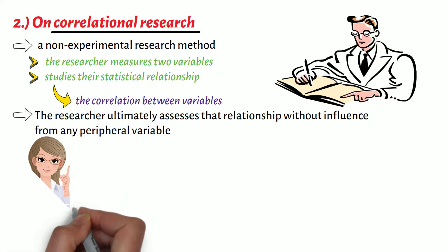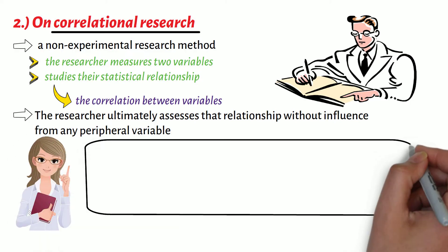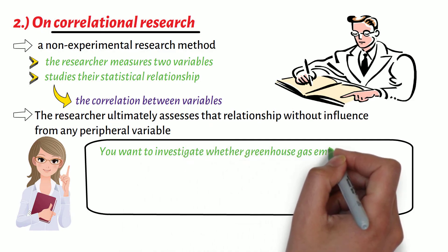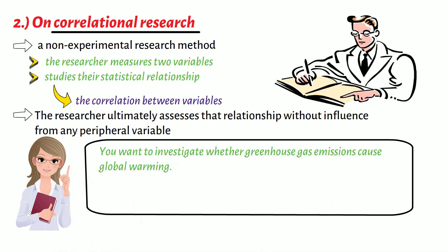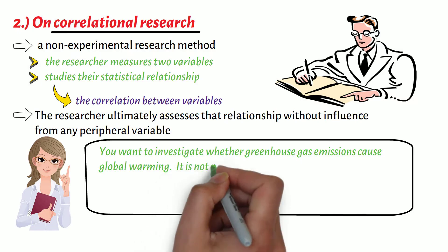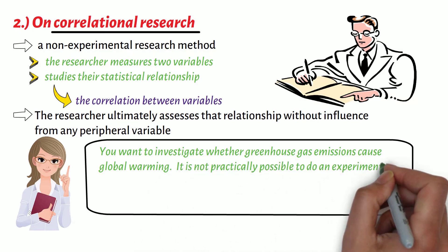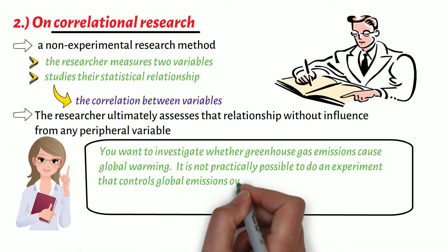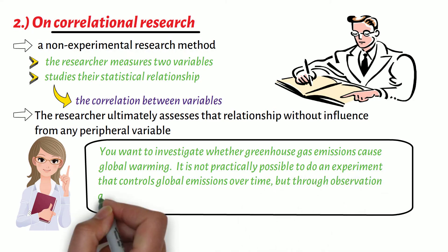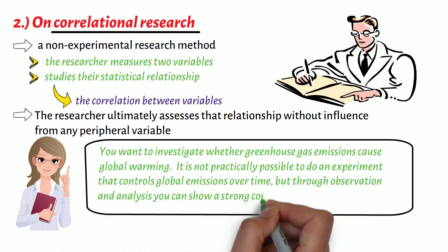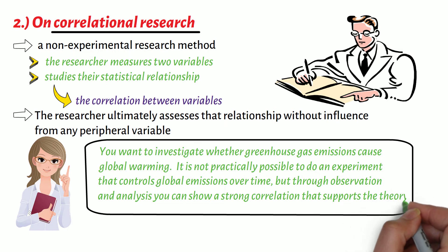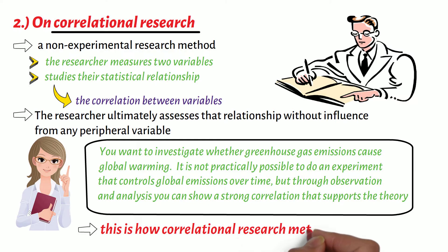Let's take this example. You want to investigate whether greenhouse gas emissions cause global warming. It is not practically possible to do an experiment that controls global emissions over time, but through observation and analysis you can show a strong correlation that supports the theory. As we can see, this is how correlational research method works.